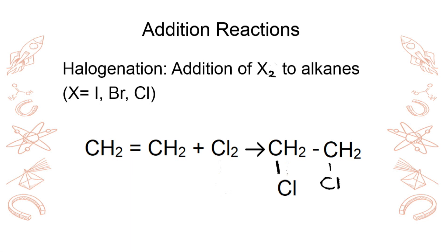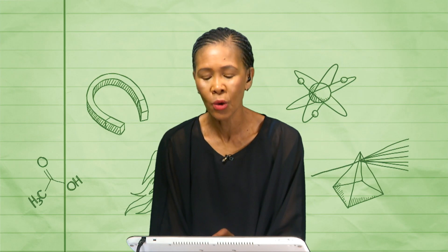Another type of addition reaction is halogenation — you are adding a halogen. This is the addition of a halogen, and in most cases it is in the form of a diatomic molecule. For example, we have an alkene reacting with chlorine, and the double bond is broken: one carbon bonds with one Cl atom, and the other bonds with the second Cl. The compound goes from unsaturated to saturated.